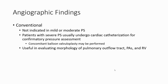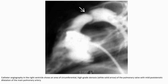Angiographic findings: Not indicated in mild or moderate pulmonary valve stenosis. Patients with severe pulmonary valve stenosis may undergo cardiac catheterization for pressure assessment. Concurrent balloon valvuloplasty may be performed. It is useful in evaluating morphology of the pulmonary outflow tract and pulmonary artery stenosis. This image shows an area of circumferential high-grade stenosis of the pulmonary valve with mild post-stenotic dilatation of the main pulmonary artery.